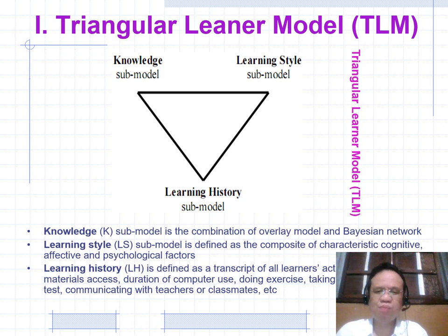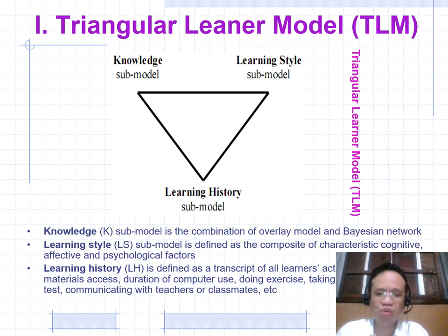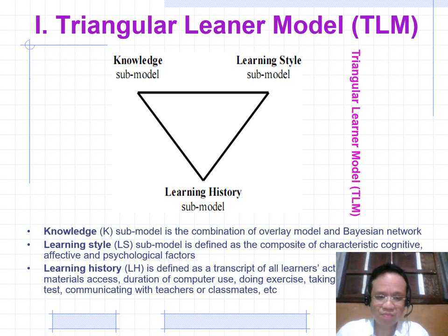There are three submodels in the Triangular Neural Learning Model. The Knowledge (K) submodel is the combination of an overlay model and a Bayesian network. The Learning Style (LS) submodel is defined as the composite of cognitive, affective, and psychological factors. The Learning History (LH) submodel is defined as the transcript of all learner actions such as learning material assets.